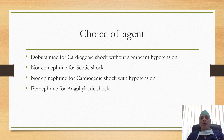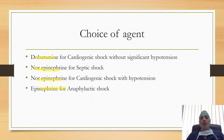In terms of choice of agent: dobutamine should be used for cardiogenic shock when there is no significant hypotension. Norepinephrine should be used for septic shock. Norepinephrine should be used for cardiogenic shock when there is hypotension. And epinephrine should be used for anaphylactic shock.